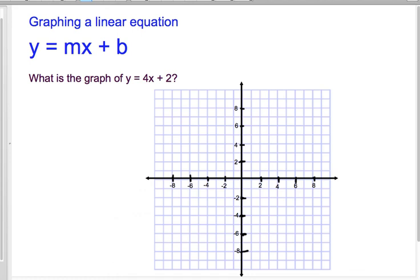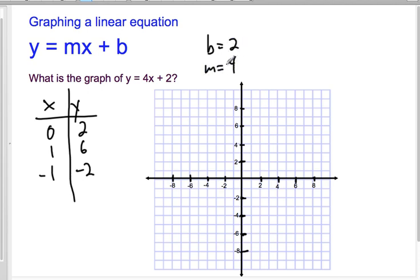All right, last example here. Let's say we wanted to graph this linear equation. So we've been graphing equations. We know how to do it. We could just make a t-chart. x, y. Come up with some x values. 0, 2, 1, 6, and so on. Negative 1, negative 2. But the cool part about slope-intercept form is that these two pieces of information, the b of 2 and the m of 4, is all we need to graph it.